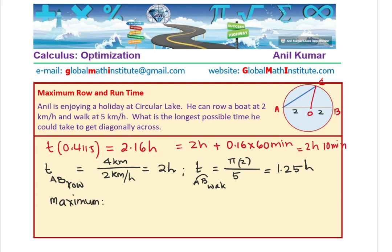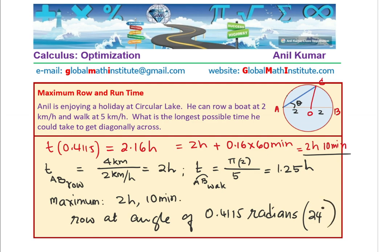So maximum time is 2 hours and 10 minutes. And that is when Anil will row at an angle of 0.4115 radians. You can convert to degrees, by multiplying by 180, dividing by pi. And you get 23.57, let us say 24 degrees approximately. You get the idea. So that is how you are going to solve this particular question.